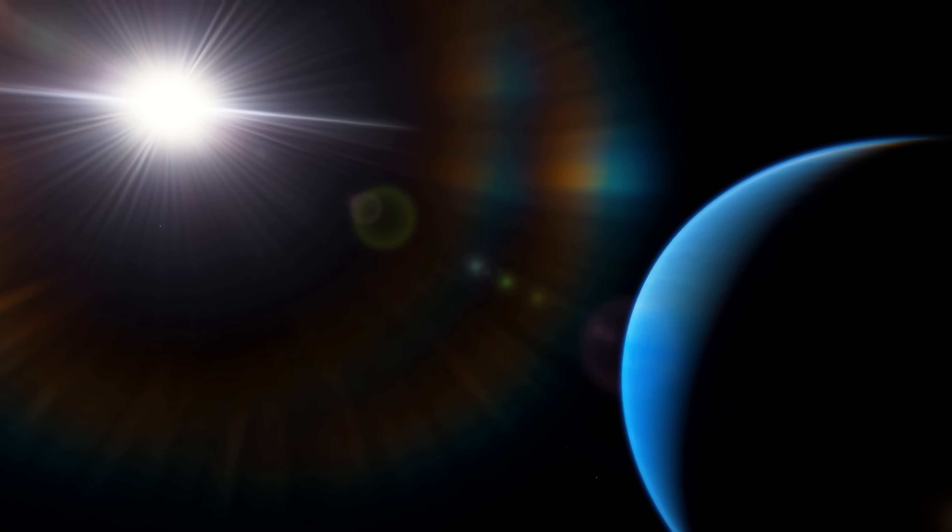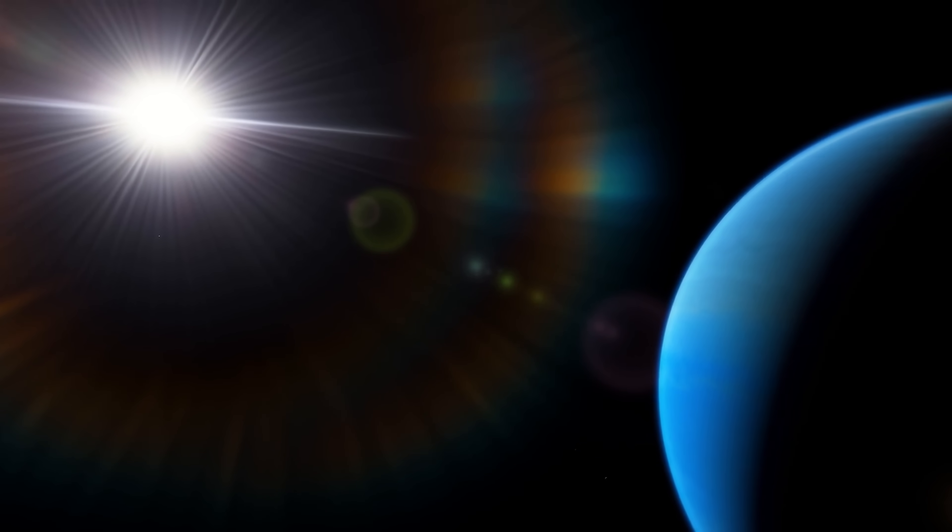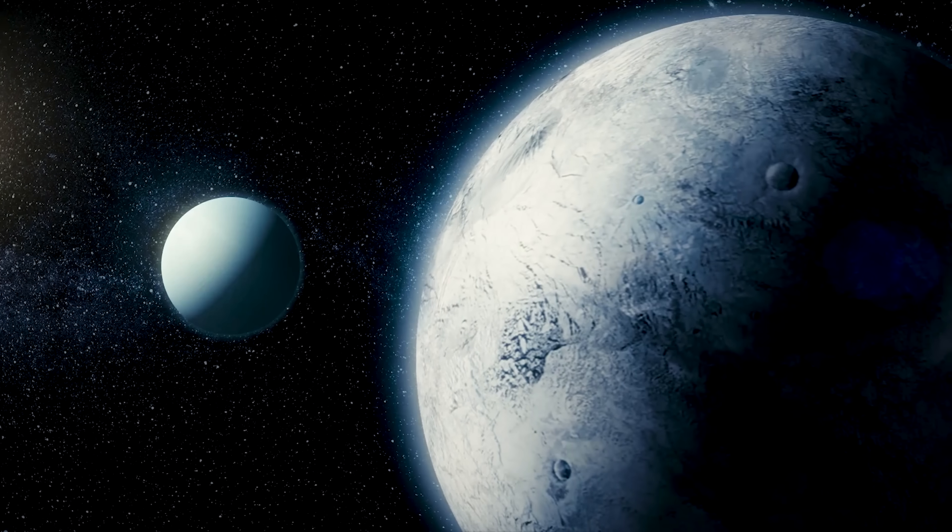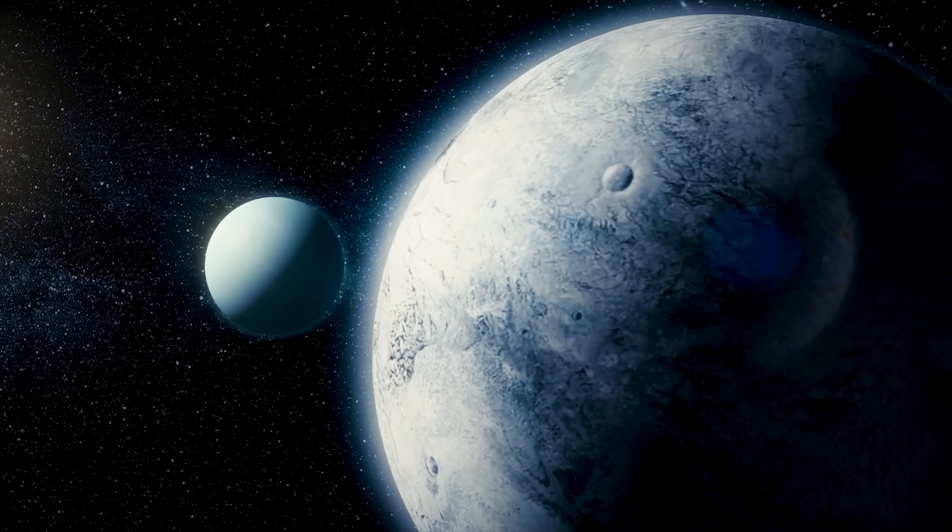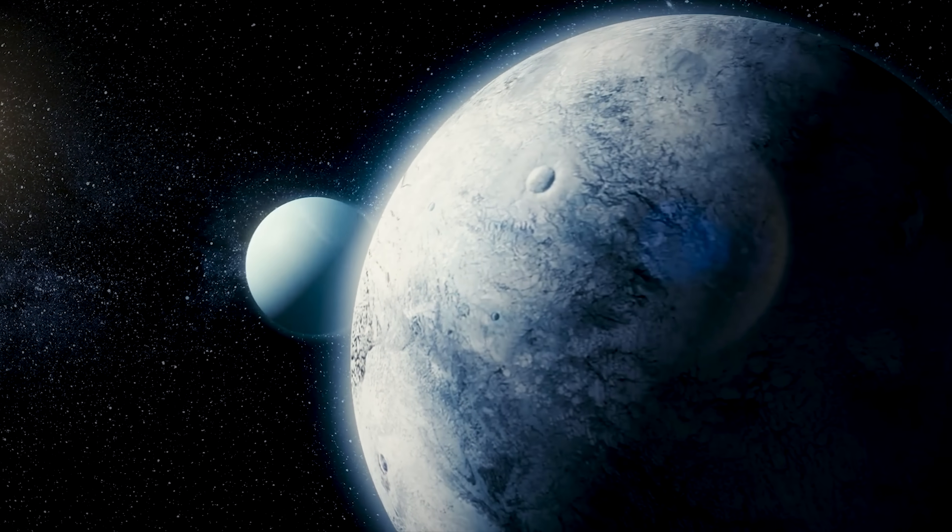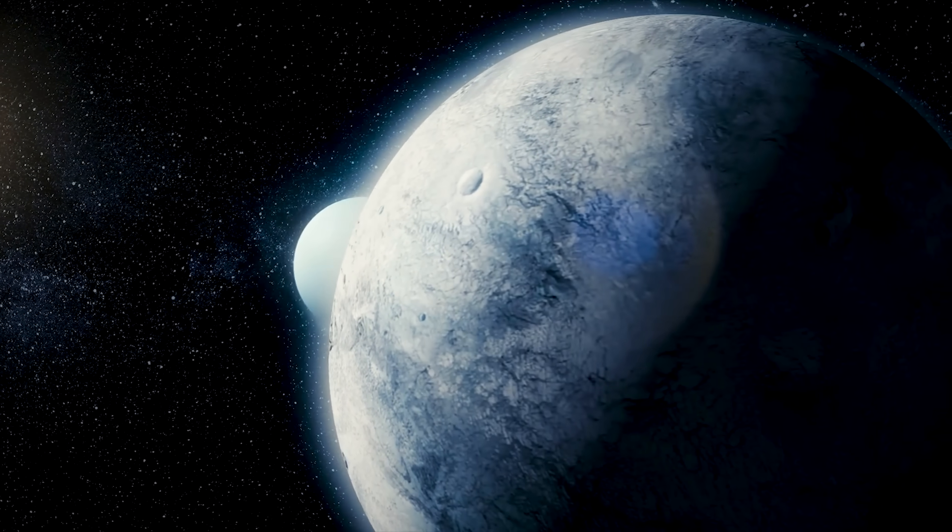Some astronomers speculated that perhaps this planet was so far from Earth that it would be virtually impossible to see with modern telescopes. Others theorized that this planet was actually much smaller than what Michael E. Brown and his team had initially measured, making it virtually impossible to observe with modern telescopes.